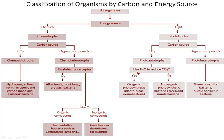If photoautotrophs use H₂O to reduce CO₂ and emit oxygen, they are known as oxygenic. If instead of H₂O they use other compounds like H₂S or H₂, they don't release oxygen and are known as anoxygenic. Oxygenic photosynthesis occurs in plants, algae, and cyanobacteria.